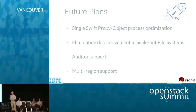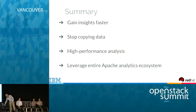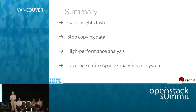The other future items are really about achieving equivalence with traditional Swift — features like multi-region support. Right now Swift on file doesn't support that, so we want to look at what it would take to provide the same functionality. In summary, the architecture demonstrated today provides a way to get insights into your data in your Swift object store more quickly by no longer copying data unnecessarily, providing high performance analytics, and leveraging the entire Apache analytics ecosystem.